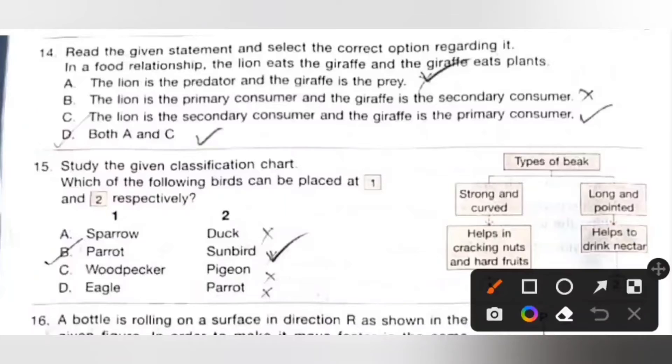Fourteen: Read the given statement and select the correct option regarding it. In a food relationship, the lion eats the giraffe and the giraffe eats plants. A: The lion is the predator and the giraffe is the prey, it is the correct one. B: The lion is the primary consumer, no, it is a secondary consumer. C: The lion is the secondary consumer and the giraffe is the primary consumer, it is the correct statement. So both A and C, option D is the correct answer.